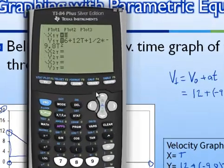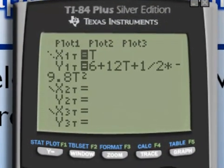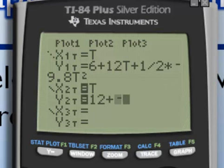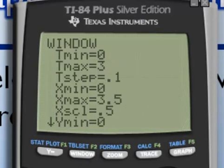Let's bring up the calculator and plug those values in and see what we can find. We'll go to the Y equals. I'm going to turn this graph off by hitting enter and then going down to a new graph and type T for the X equals and 12 + -9.8*T for the second graph.